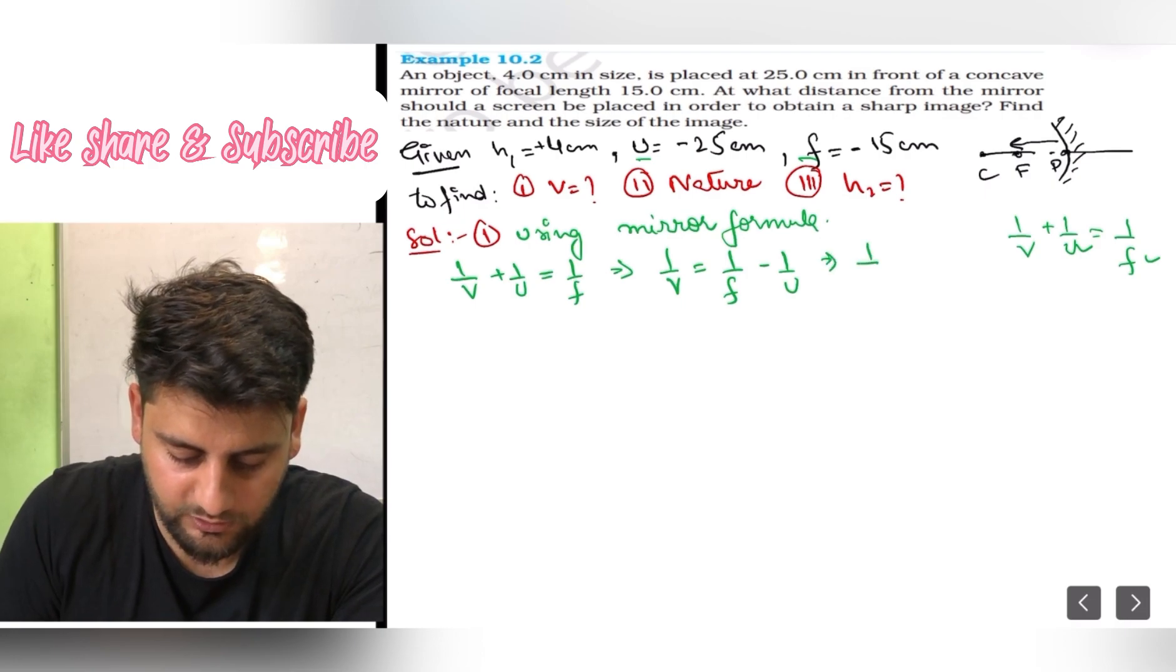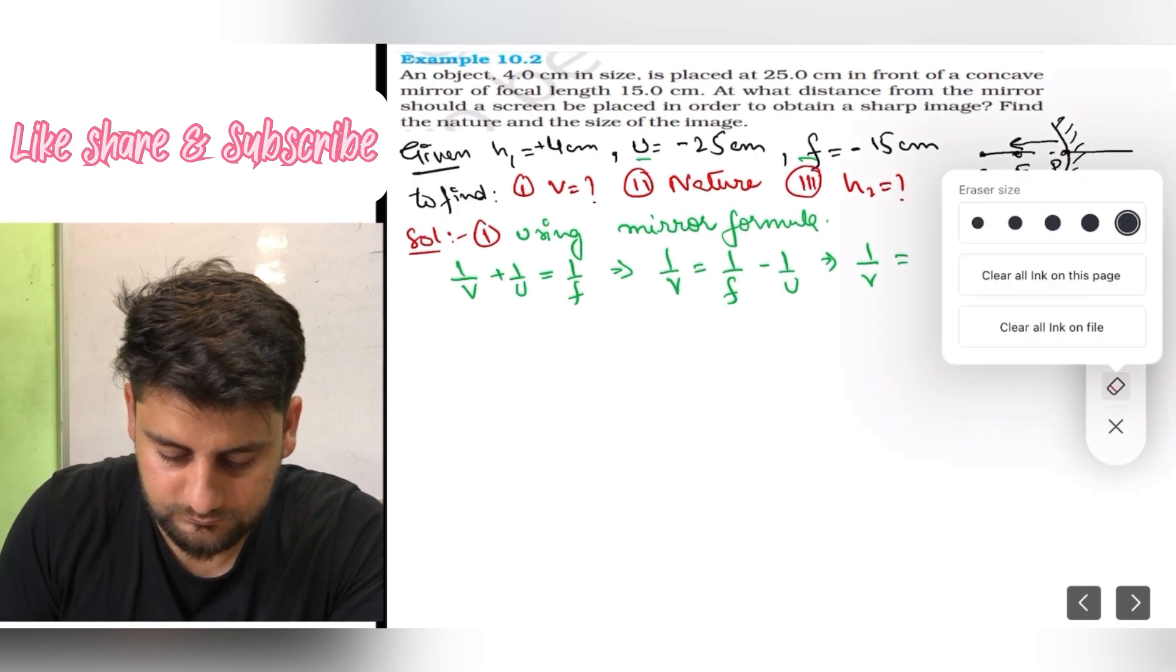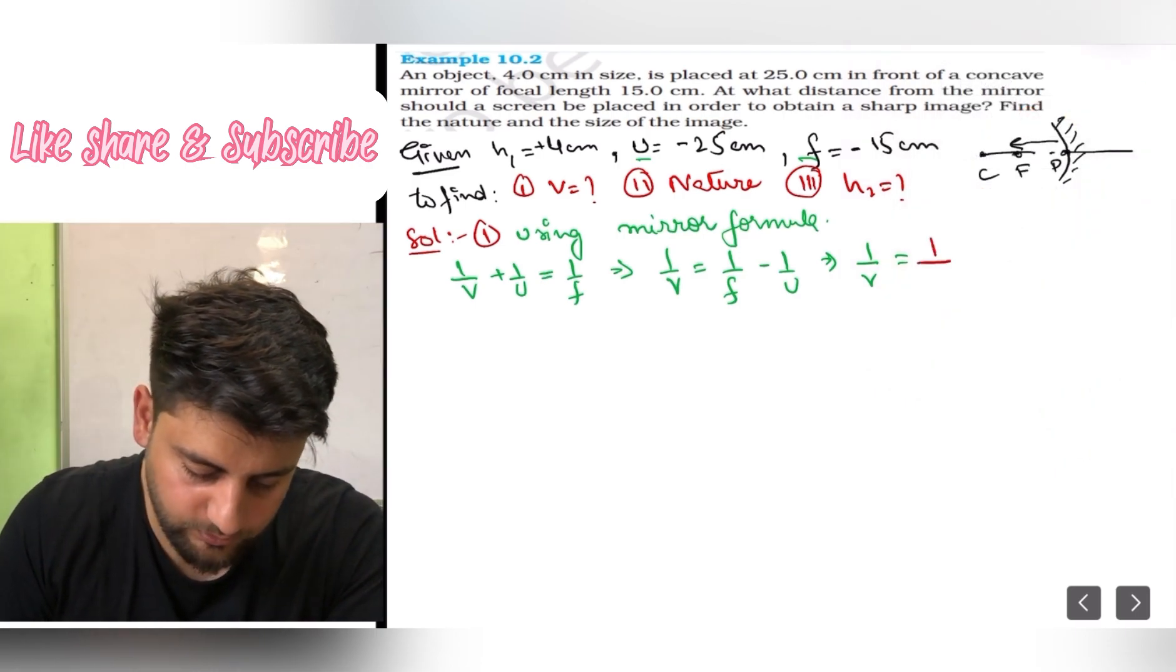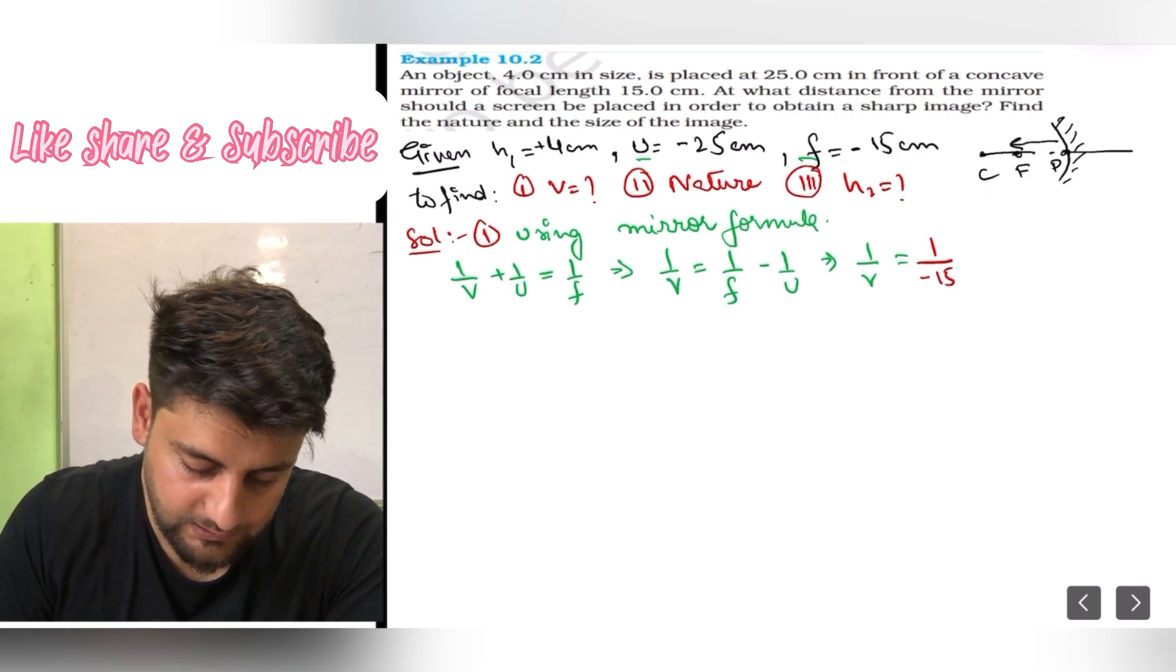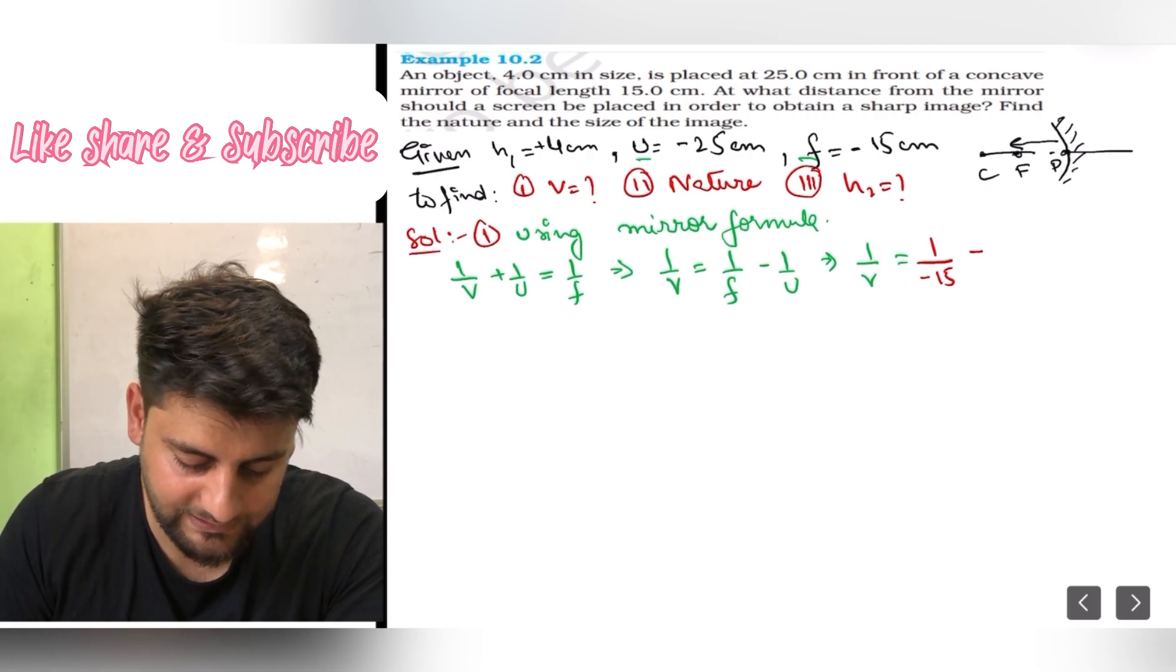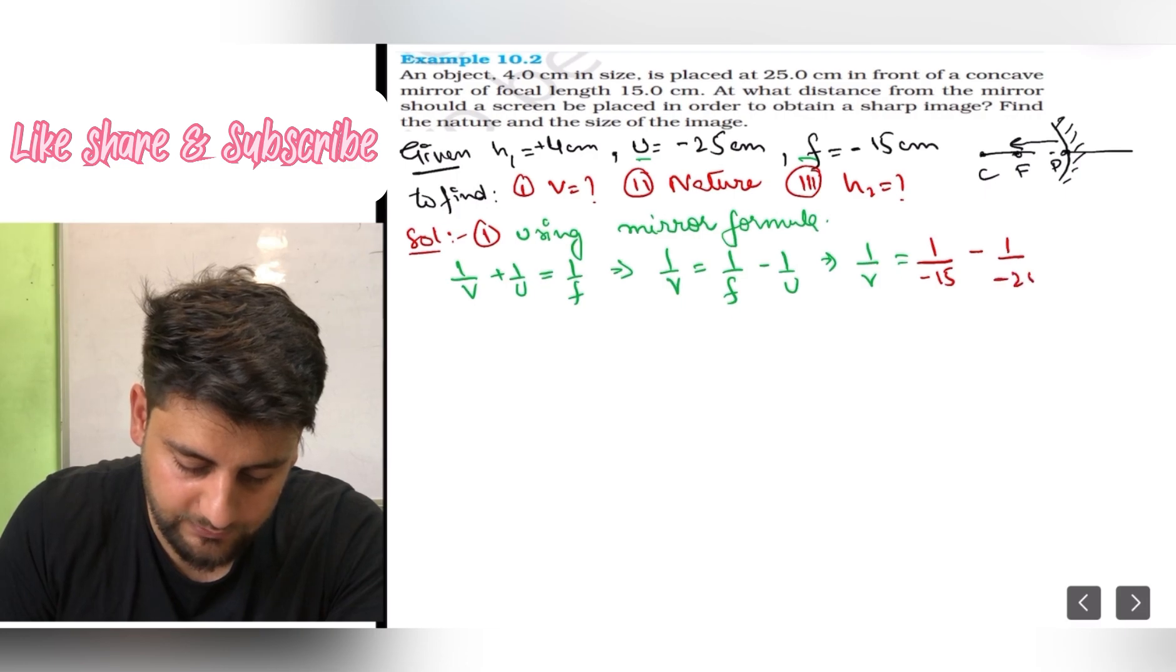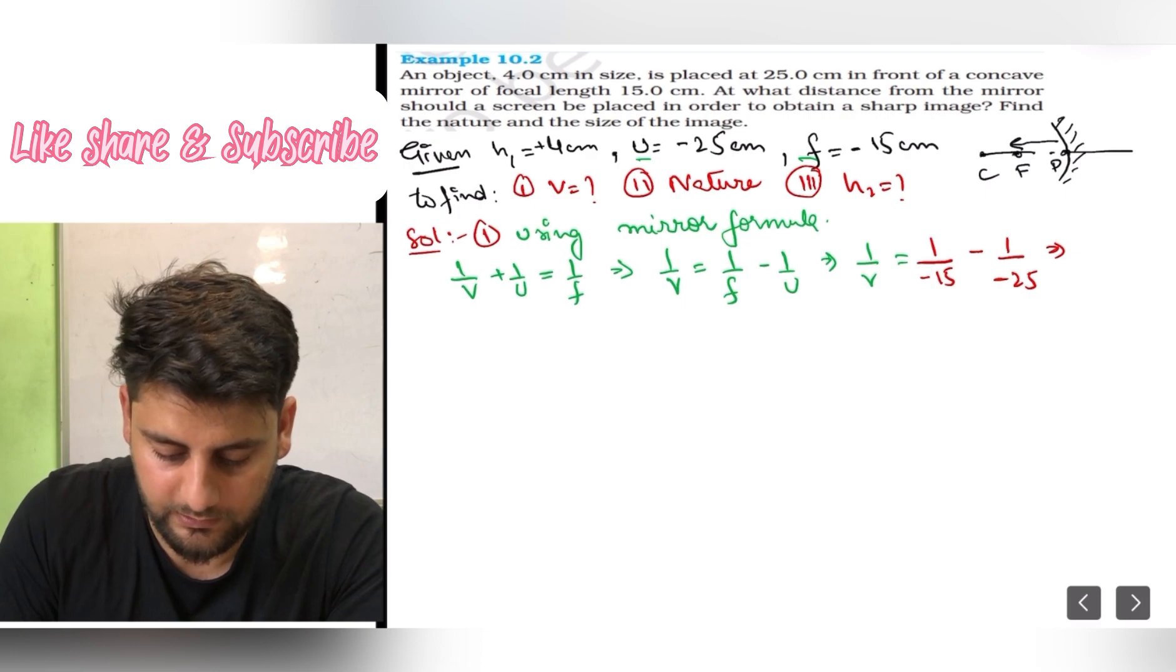Now we can put values. 1 upon v equals, 1 upon f first, minus 15. Minus minus 1 upon u is minus 25. So 1 upon minus 15 minus minus is plus, so it becomes 1 upon 25. I will write 1 upon v equals 1 upon 25 minus 1 upon 15.